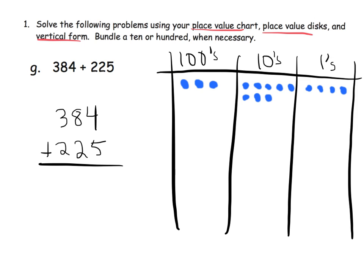In the same way, we're going to model 225 — that's 2 in the hundreds column, 2 in the tens column, and 1, 2, 3, 4, 5 in the ones column. Now that we've modeled the problem, we're ready to start solving. First, we look at the ones column: we have 4 up here and 5 down here, so we have a total of 9 in the ones column, and that's not enough to need any regrouping. So in vertical form, 4 ones plus 5 ones equals 9 ones.